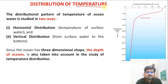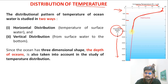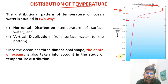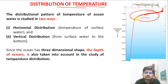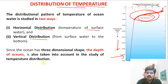When we talk about the distribution of temperature, a key graph comes into the picture showing increasing depth versus increasing temperature. Around 25°C at the surface, temperature starts to decrease at about 300 meters depth, then quickly descends. The area between 300 to 1000 meters is called the thermocline, where there is a sharp decrease in temperature. Horizontal distribution refers to surface distribution; vertical distribution refers to how temperature changes with depth.